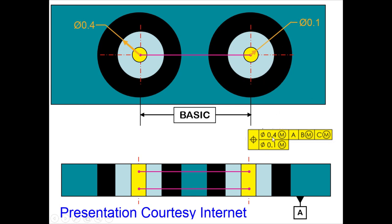Inside that we have diameter 0.1 yellow color cylindrical tolerance zone. So there are two cylindrical tolerance zones, one inside the other: the blue one with 0.4 and the yellow one with 0.1. So if we give like this, then what will happen? Let's see.